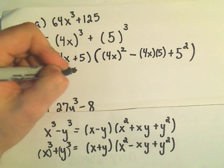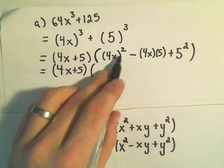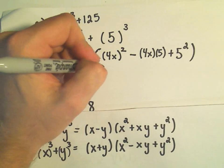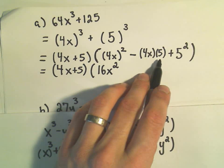If we simplify this, we have 4x plus 5 in the front. Not much to do there. And I'm going to take 4x and square it. So 4x times 4x would be 16x². We have negative 4x times 5.